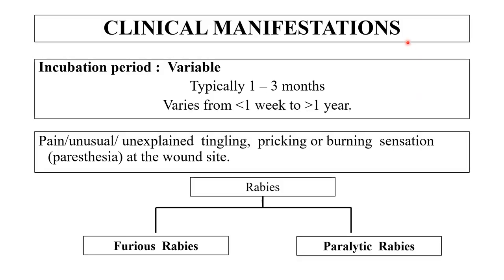Clinical manifestation: the incubation period is variable, typically one to three months, but can vary from one week to greater than one year — sometimes up to five or ten years. Incubation period is the time between entry of the pathogen and appearance of the first symptom. Manifestations include pain, unusual, unexplained tingling, pricking or burning sensation, and paresthesia at the wound site. There are two types of rabies: furious rabies and paralytic rabies. The incubation period is related to the distance the virus must travel from the inoculation site to the CNS — hence it is shorter in children or when bites are on the head, neck or upper limb.